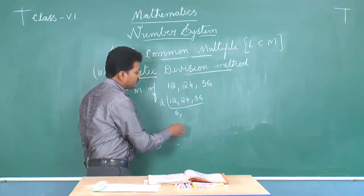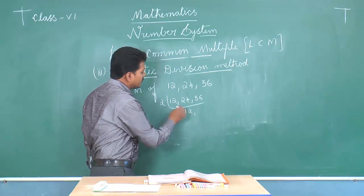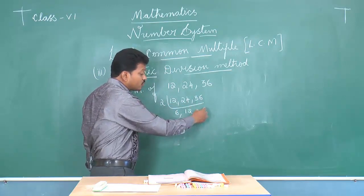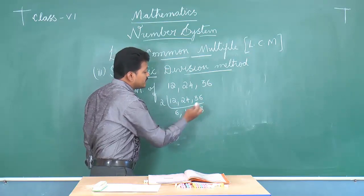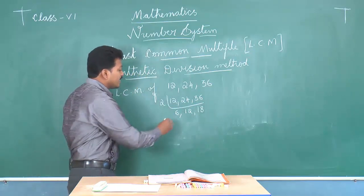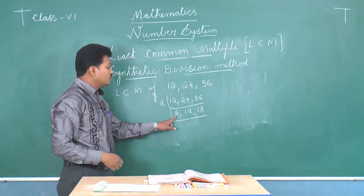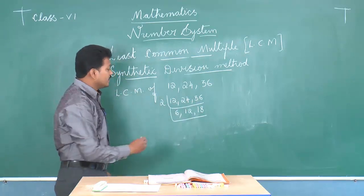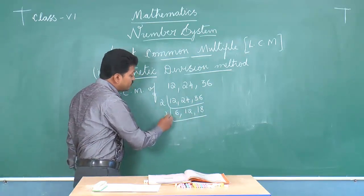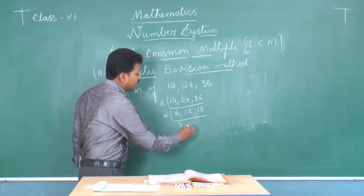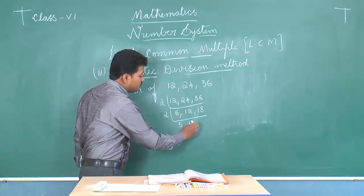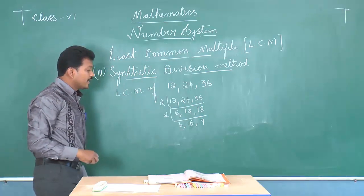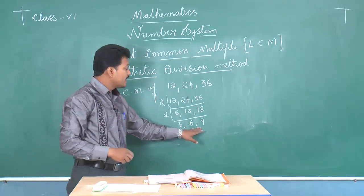So we get 6, 12, and 18 in the next row. We write only the quotients. Now 6, 12, and 18 are not co-primes, so we continue. All three numbers are again divisible by 2. Dividing: 6 ÷ 2 = 3, 12 ÷ 2 = 6, 18 ÷ 2 = 9. So we get 3, 6, and 9 in the next row.